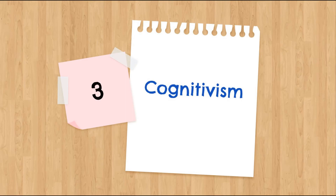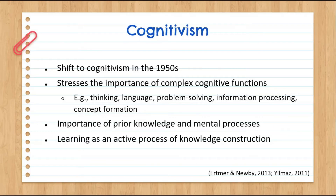Let's briefly talk about cognitivism. You'll notice there's some overlap with ideas in our next module on constructivism, since theorists like Piaget and Vygotsky were also very influential in this movement towards a cognitivist perspective on learning. In the late 1950s, we started to see a shift towards learning theories from the cognitive sciences, because behaviorism wasn't explaining why or how people made sense of and processed information.